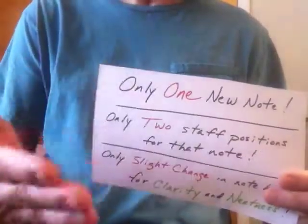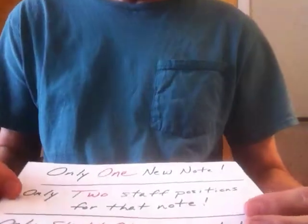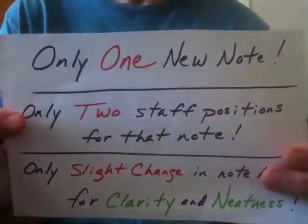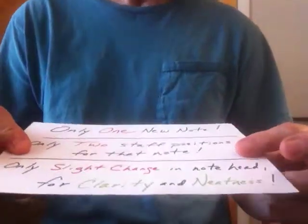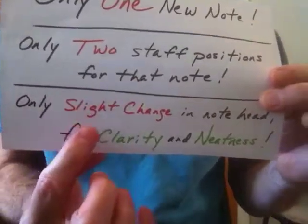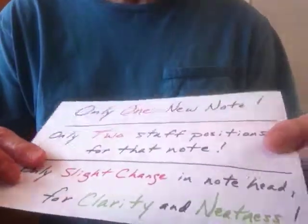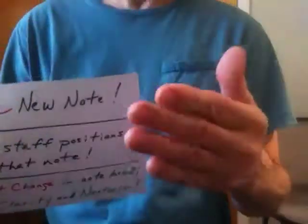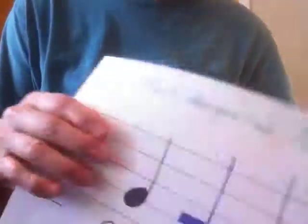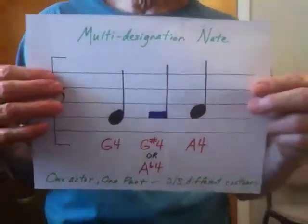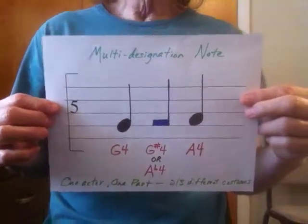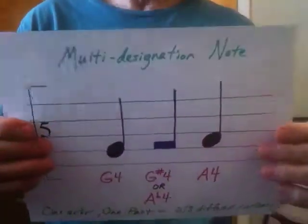I'm showing you a new idea that uses only one new note — only one. And there are only two staff positions for that note, only two staff positions. There's only a slight change in the note head, and that's done for clarity and neatness, to keep your musical score neat and readable. I can't think of a better shape for the note head. If this were printed neatly on a musical score, it would be so much neater than my hand-drawn version. That's it — it's a multi-designation note.